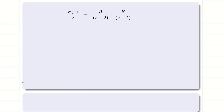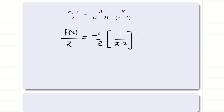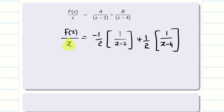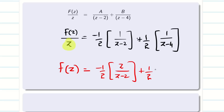Now substitute the values of A and B in a legible way: F(Z)/Z = (−1/2)·[1/(Z−2)] + (1/2)·[1/(Z−4)]. All Z-transform formulas have Z in the numerator, which is why we reserved it. Taking Z to the other side: F(Z) = (−1/2)·[Z/(Z−2)] + (1/2)·[Z/(Z−4)].